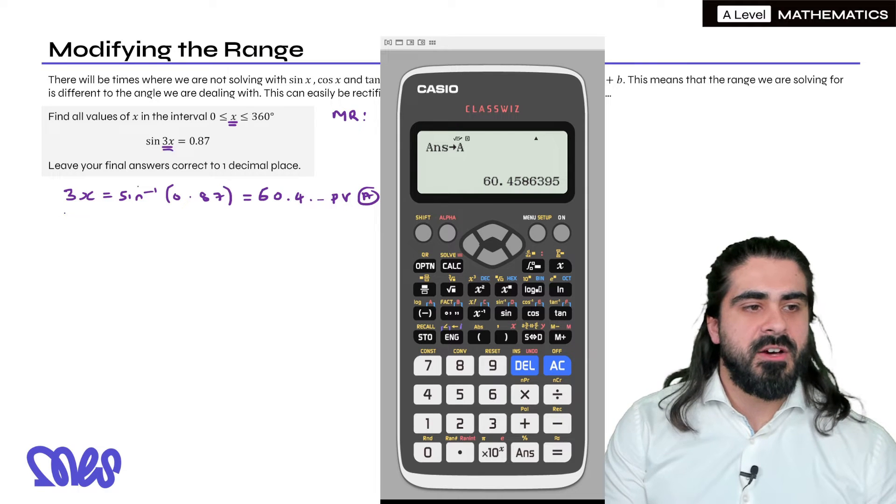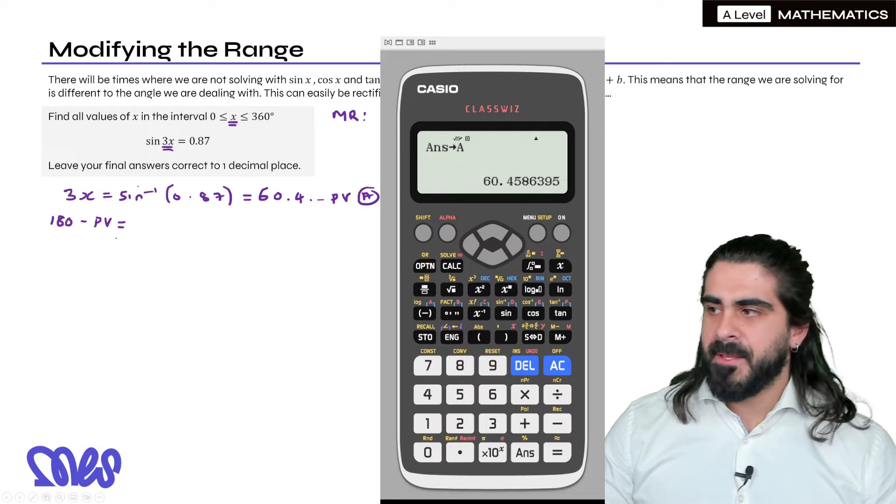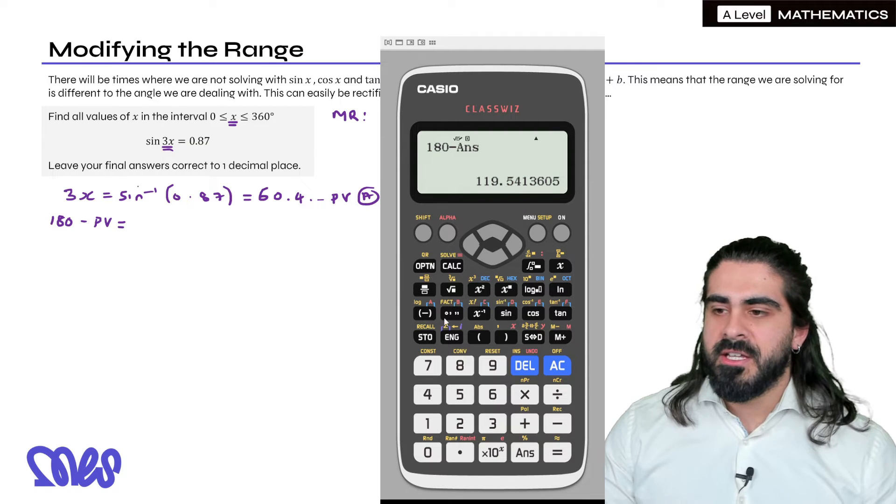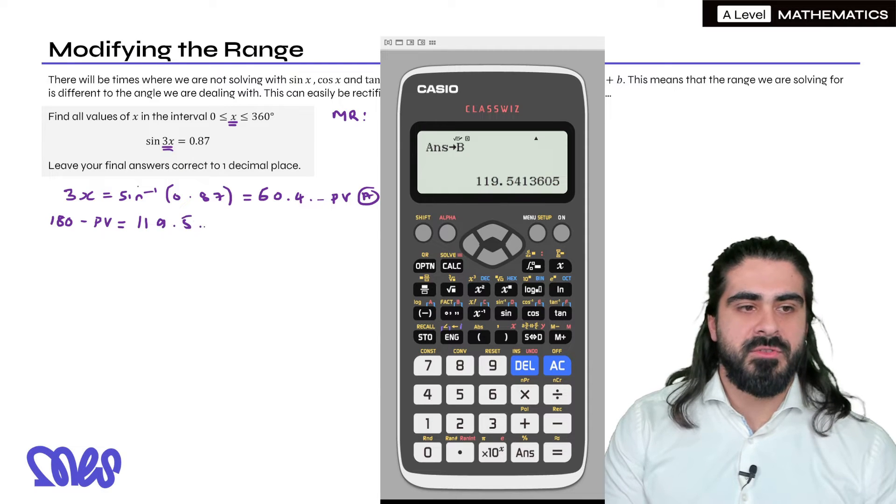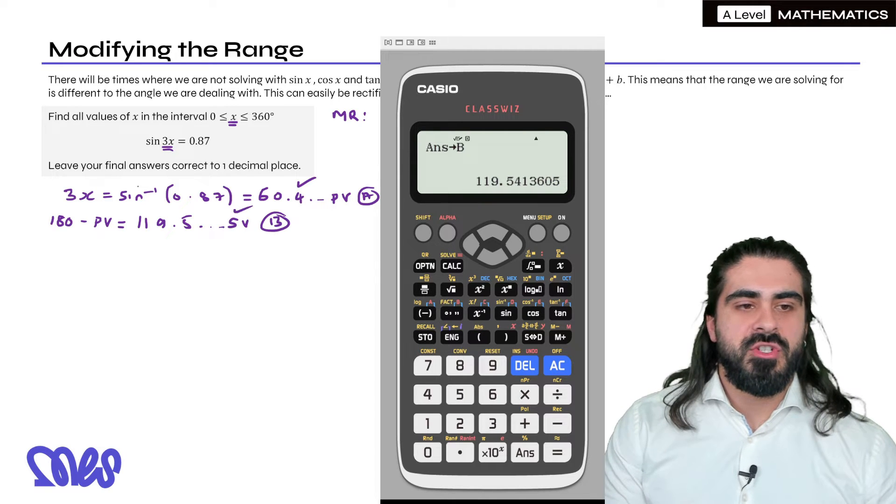Now for sine, how do you work out the secondary value? You do 180 take away your primary. So here in our calculator we're going to do 180 minus the answer, which is in the range. Then we're going to STO something else. I'm going to use B. So we have 119.5 dot dot dot. That is our SV. We're storing that as B. Now both of these are in the range.